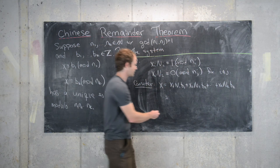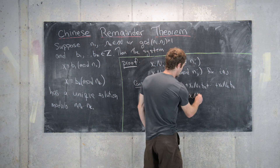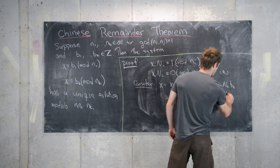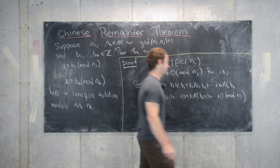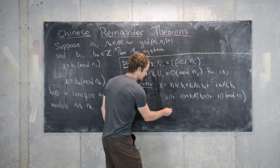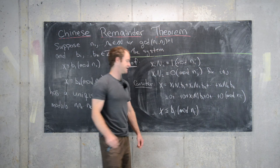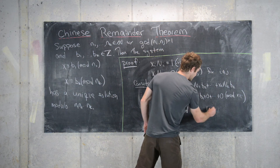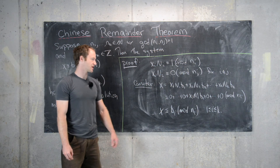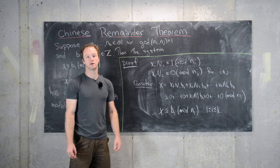So modulo n_i we get 0 + … + x_i · N_i · b_i + … + 0 mod n_i. But we already know that x_i · N_i ≡ 1 mod n_i, so that tells us that X ≡ b_i mod n_i. And this is true for all i between 1 and k. In other words, we have constructed a solution of this form where these are inverse pairs modulo n_i. That completes the existence part.